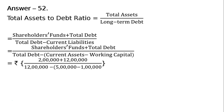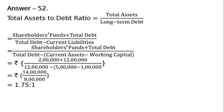That is rupees 2 lakhs plus rupees 12 lakhs upon rupees 12 lakhs minus rupees 5 lakhs minus rupees 1 lakh, which equals rupees 14 lakhs upon rupees 8 lakhs, that is equal to 1.75 is to 1.